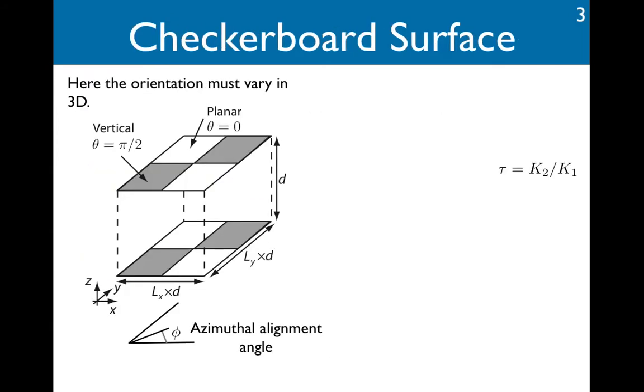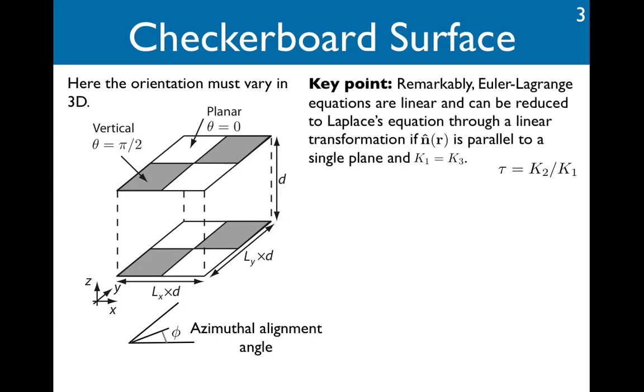So for a checkerboard surface, the orientation has to vary in 3D. Now remarkably, if we relax the original assumption that the elastic constants are equal to the situation where just two of them are equal, we'll keep the splay and bend constants equal but let the twist constant vary, the Euler-Lagrange equations remain linear and can be reduced to Laplace's equation by a linear transformation.